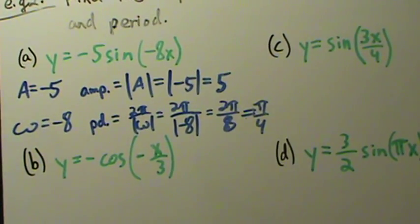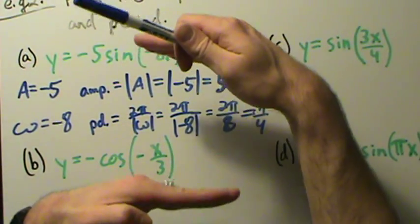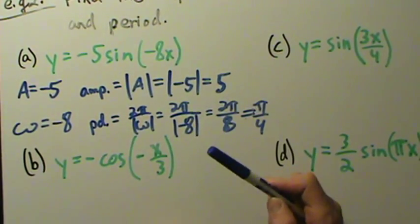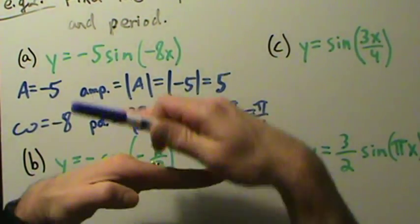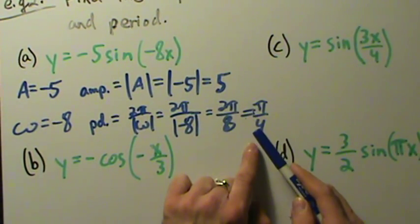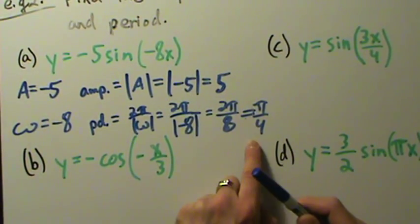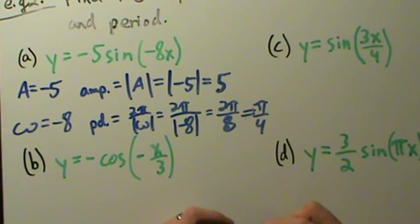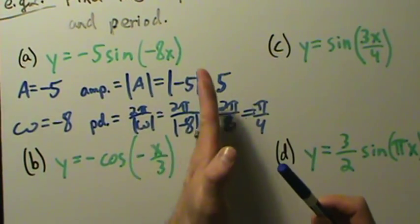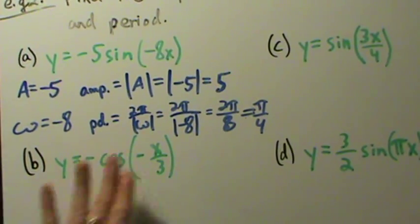An amplitude of 5 means the graph is stretched out vertically quite a bit — for plain sine of x the amplitude is just 1, so 5 is quite a stretch. A period of π/4 means every π/4 units the graph starts repeating. That's actually a small period, since normally sine and cosine have a period of 2π. So every π/4 units you have that same shape repeating.